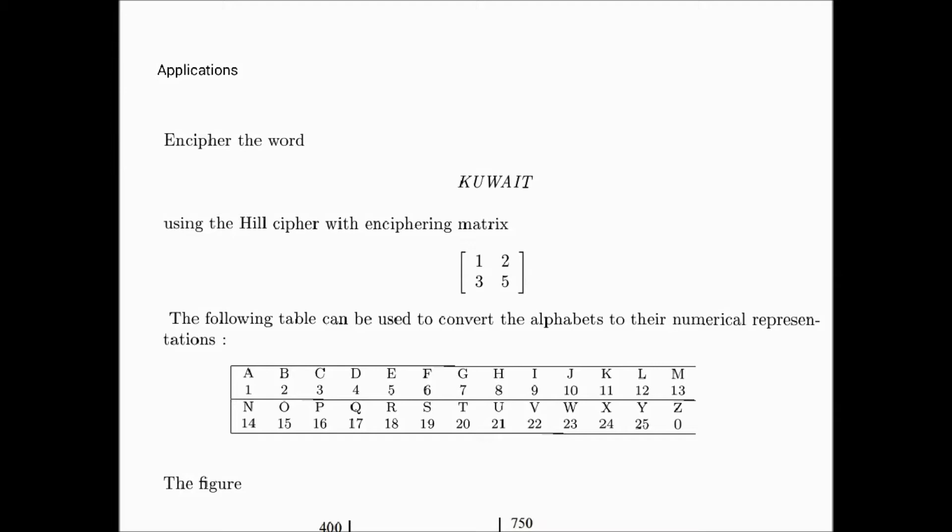I've outlined the question here for you. The word to encipher is Kuwait using the Hill cipher with enciphering matrix [1 2; 3 5]. This table shows us the conversion of all the letters to numbers, so let's proceed with that.